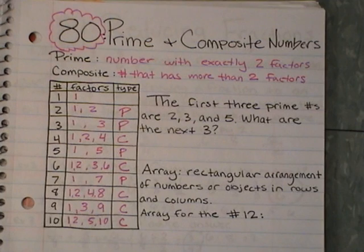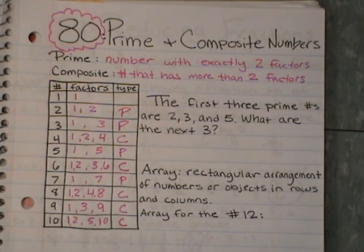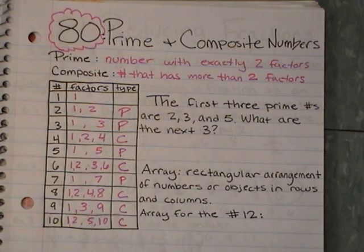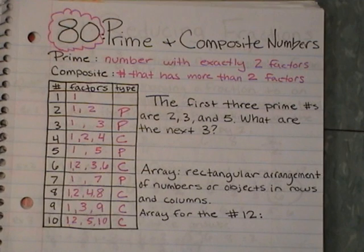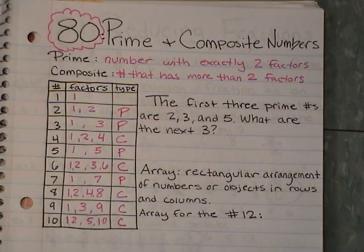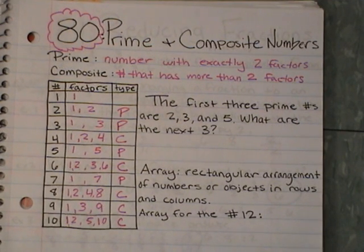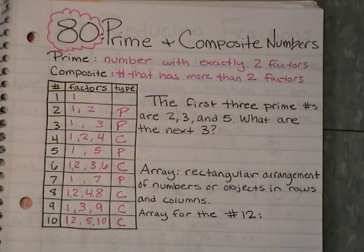9 is tricky. You might assume that because it's an odd number it's going to be prime. But 3 also fits in, so be careful. Sometimes numbers will look like they will be prime, but they will have another number that fits into it to make it composite. Most of the time, except for 2, an even number is going to have more than 2 factors, so it's going to be composite.